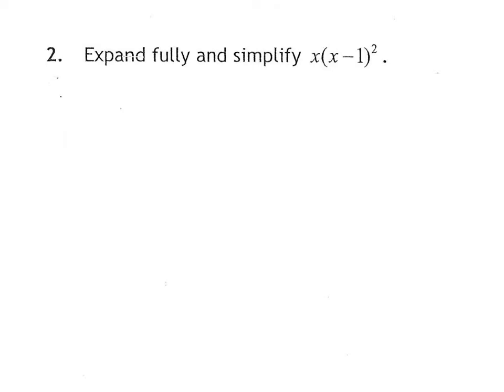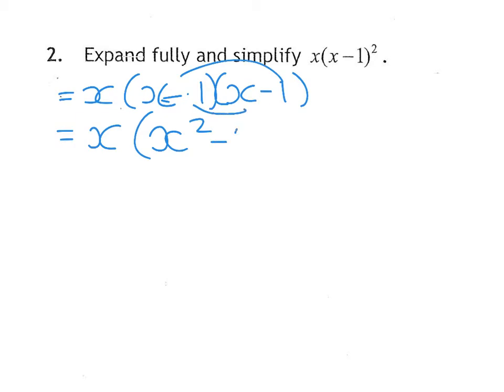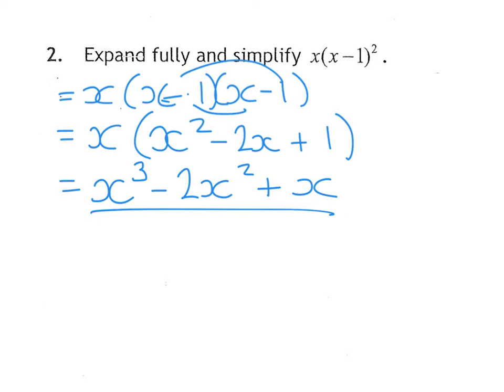Question 2 wants us to expand and simplify fully, so I'm going to write that as x bracket x minus 1, x minus 1 again. Squaring those two brackets gives me x squared, negative 2x, and plus 1. Then I'm going to times everything by x, so that gives me x cubed, minus 2x squared, plus x.